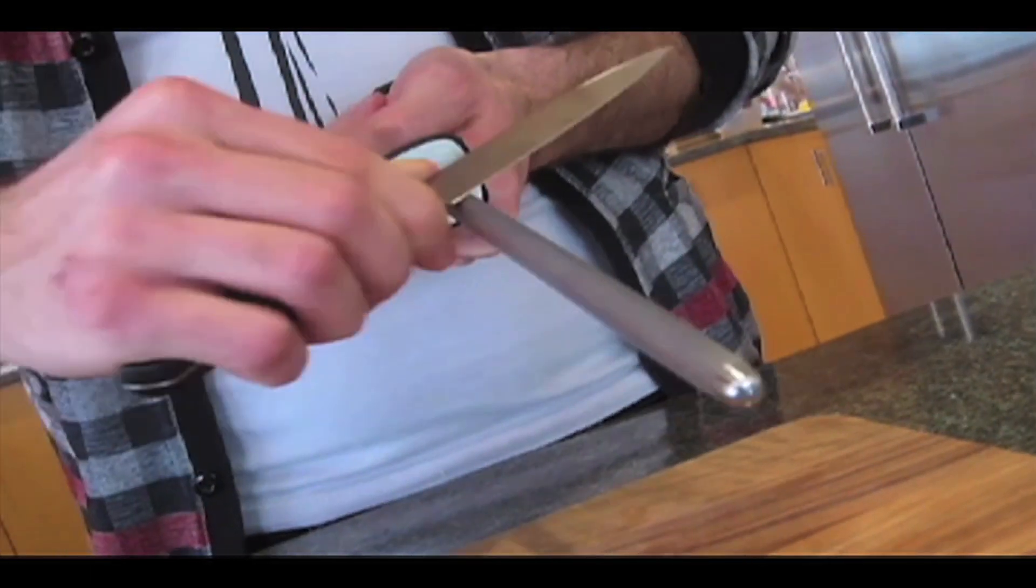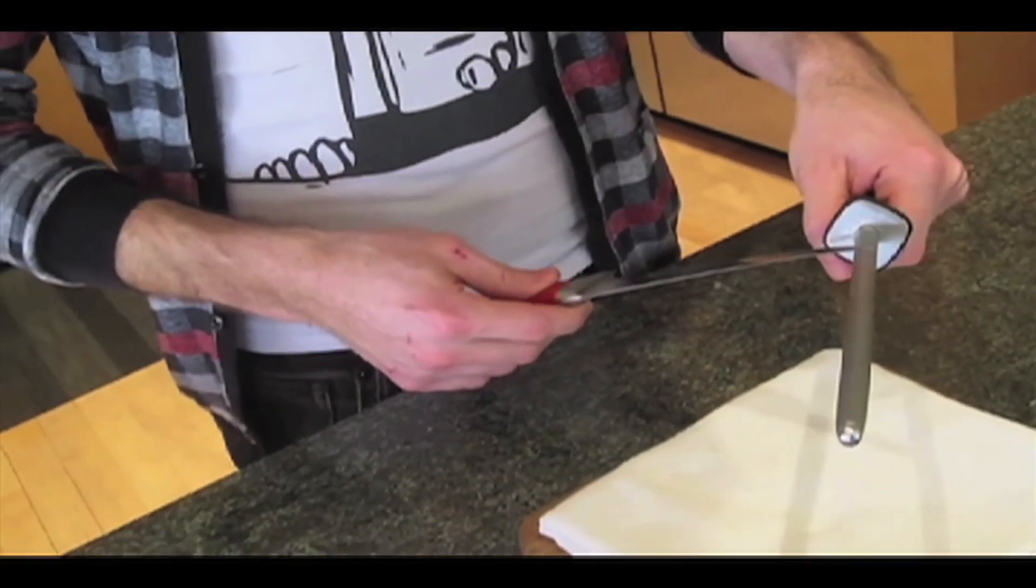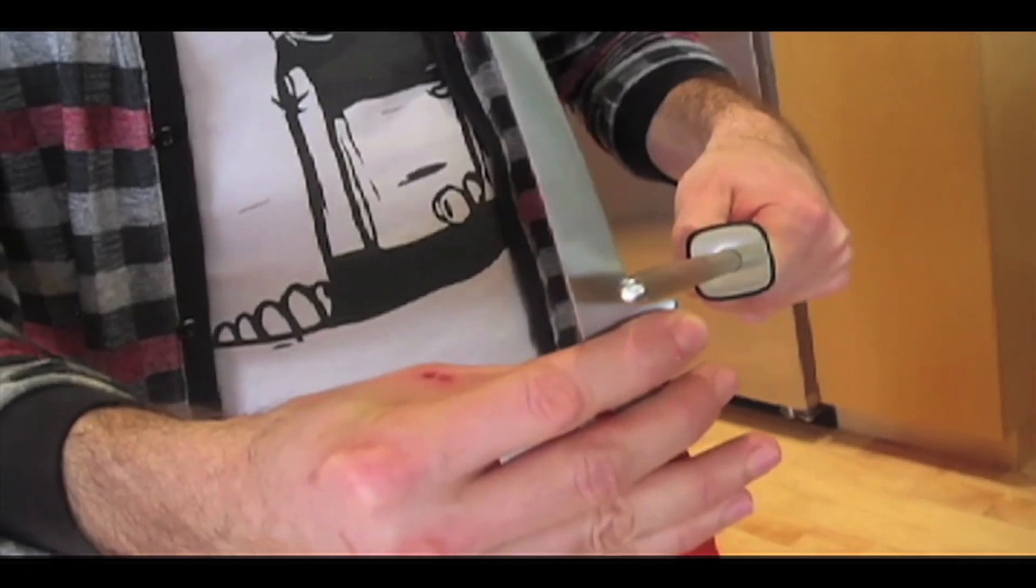One thing you want to keep in mind is to stroke the entire blade against the entire steel. Tip to heel and tip to finger guard. Don't only use a small area of the steel like this.